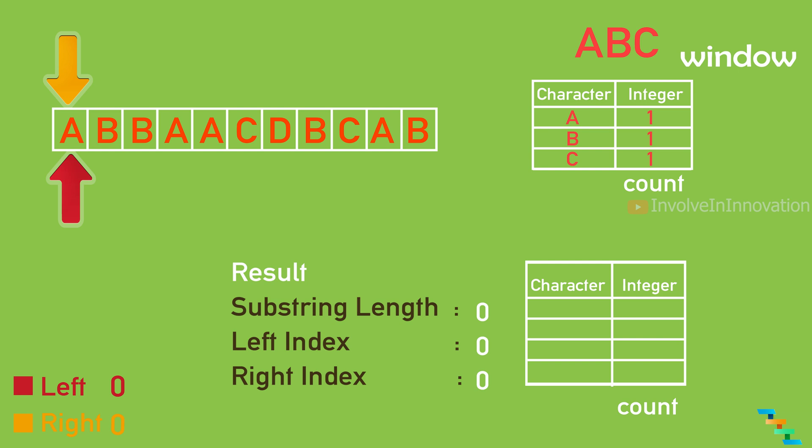If there is no match, increment the right index value until all the characters and their count in the window hash table match with the minimum window hash table. If there is a match, note this substring, then remove the left index position value from the substring and increment the left index, and check whether the hash tables still match. If they still match, note this substring. If not, increment the right index position value, add it to the minimum window hash table, and continue until the right index is less than the string length.